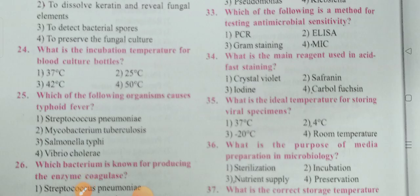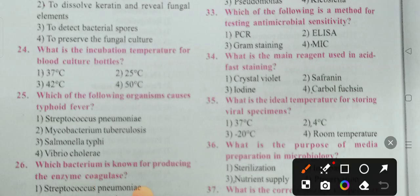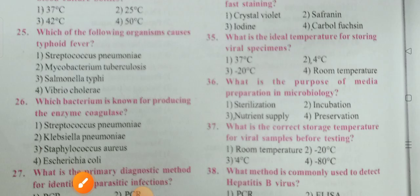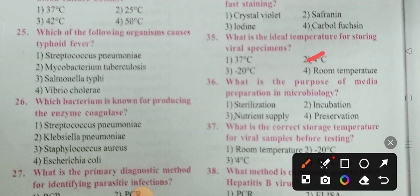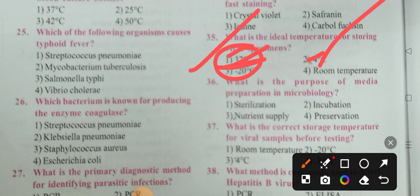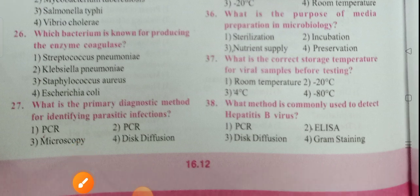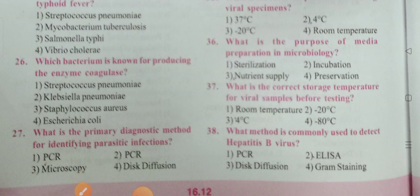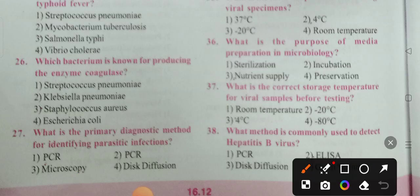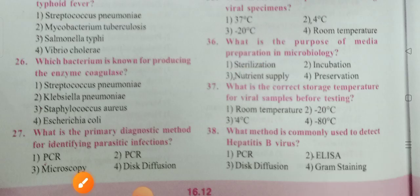Next question: What is the main reagent used in acid-fast staining? The options are crystal violet, safranine, iodine, and carbol fuchsin. Option 4, carbol fuchsin, is the correct answer. Next question: What is the ideal temperature for storing viral specimens? Option 3, 4 degrees centigrade, is the correct answer for viral specimens. Next question: What is the purpose of media preparation in microbiology? Option 3, nutrient supply, is the correct answer.